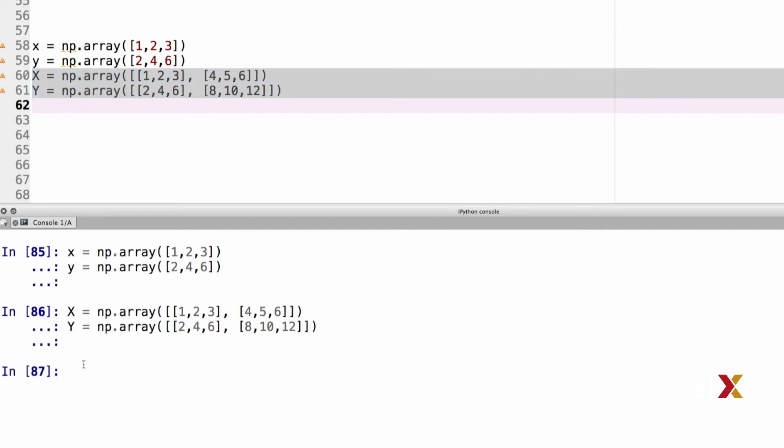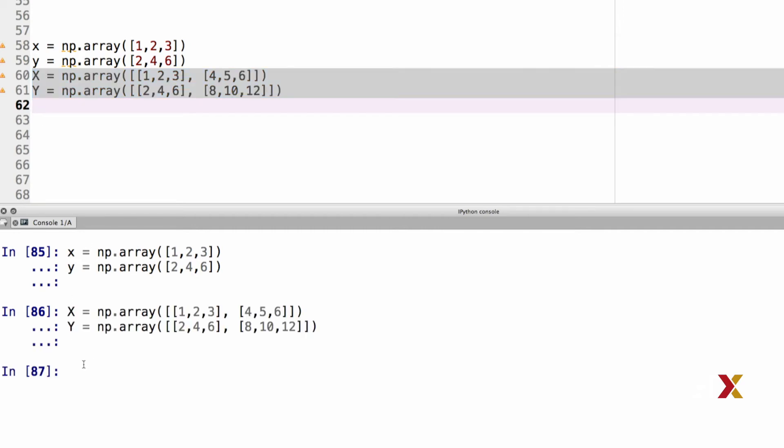Let's first see how we would access a single element of the array. So just typing x square bracket 2 gives me the element located at position 2 of x.